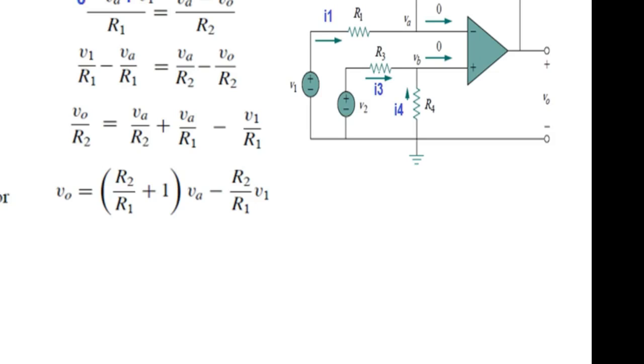we can write I1 is equal to I2 and as we have learned, we will follow the same technique. So, I1 is going from 0 to VA. So, 0 minus VA and this current is in the same direction. So, plus V1. 0 minus VA plus V1 divided by resistance R1. And current leaving is from VA to V0. So, VA minus V0 divided by R2 which is our feedback resistance in this case. And by solving these two,